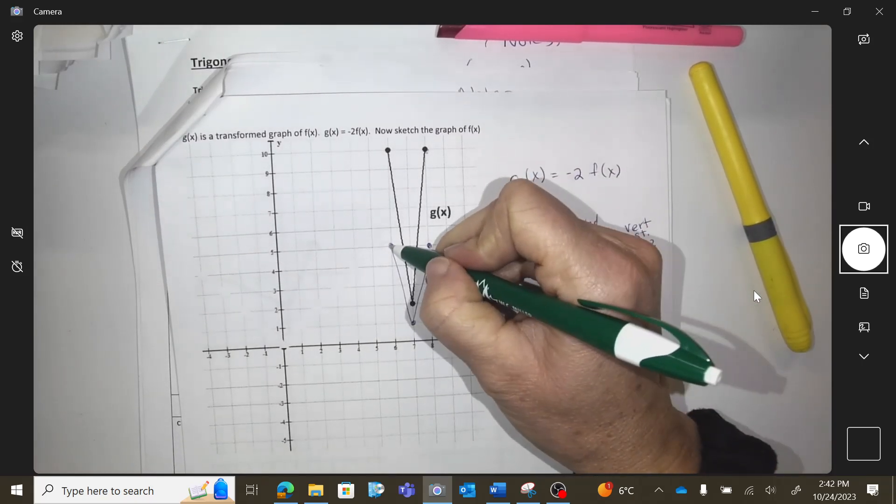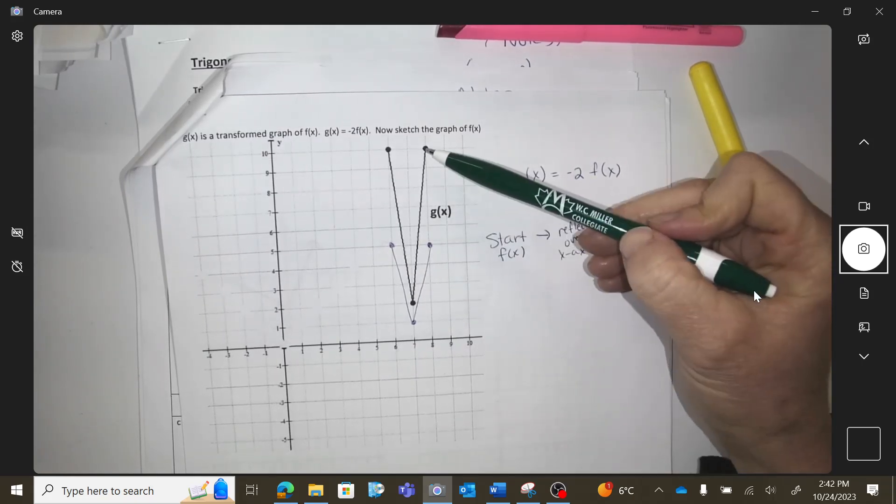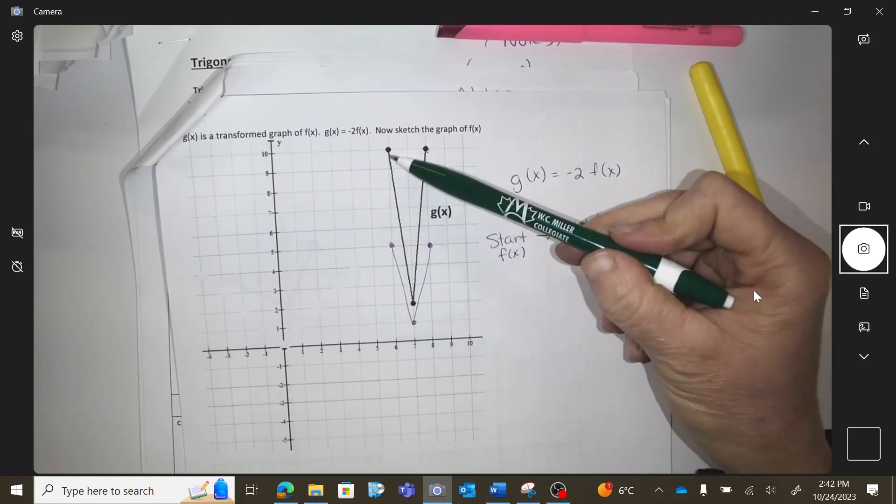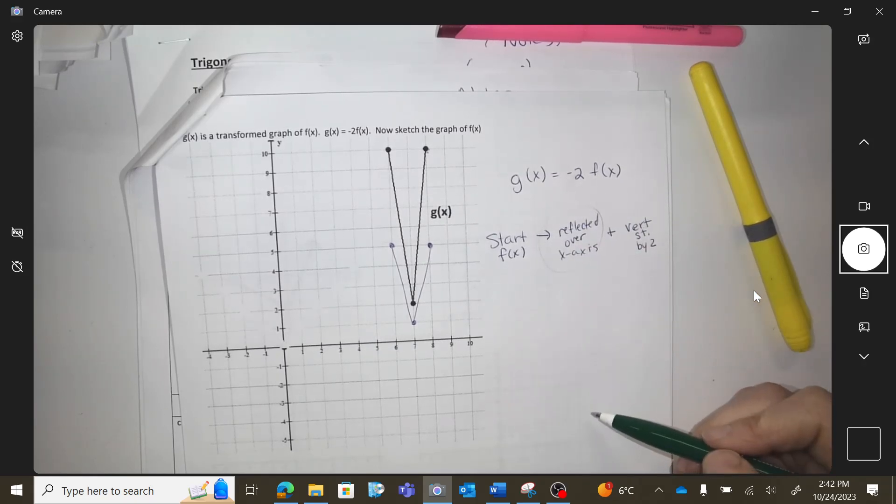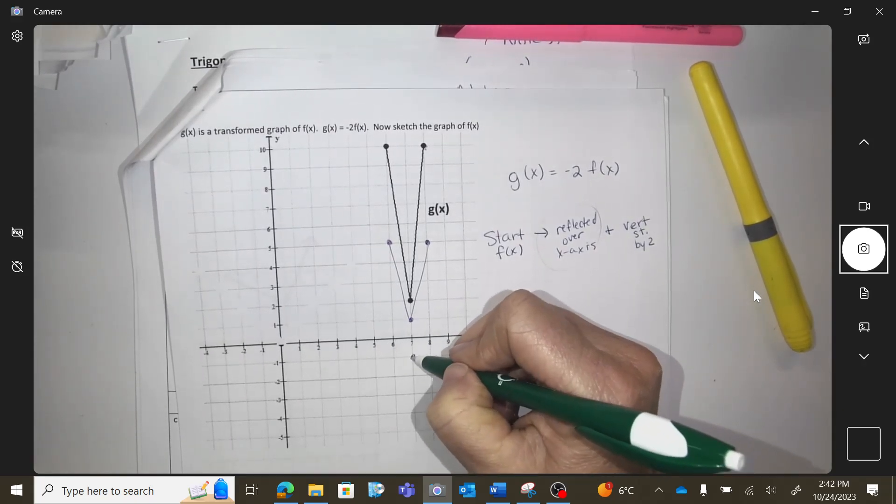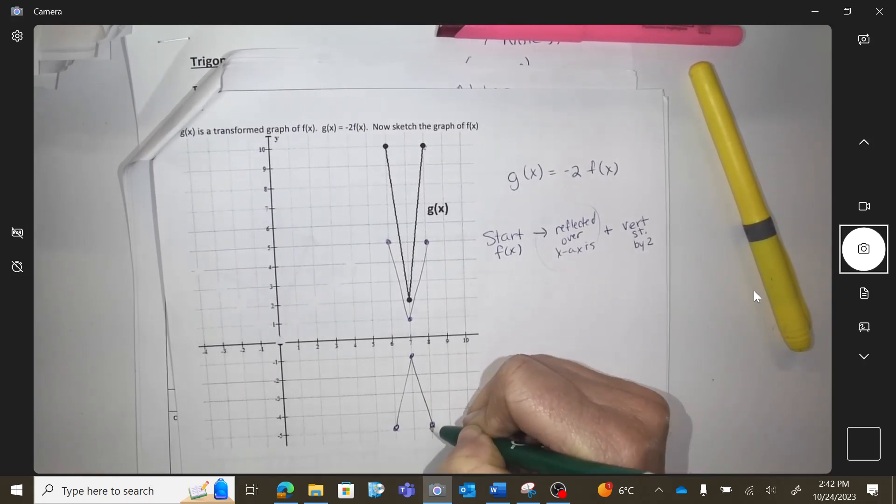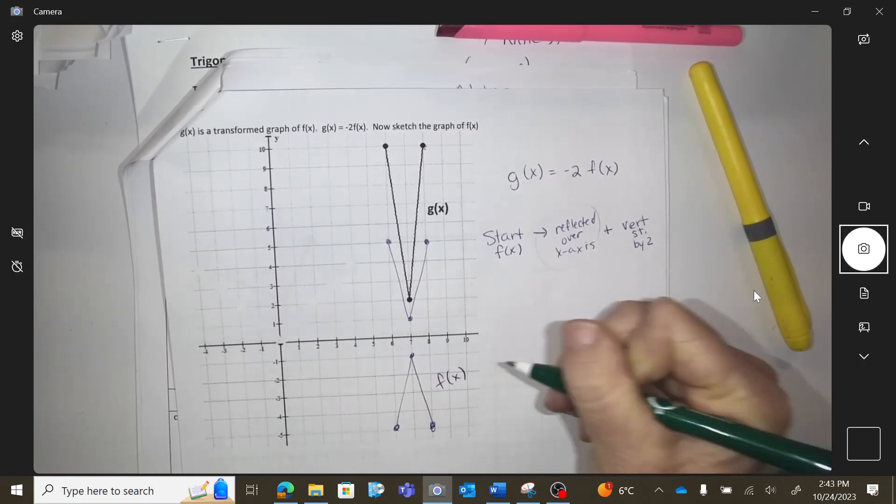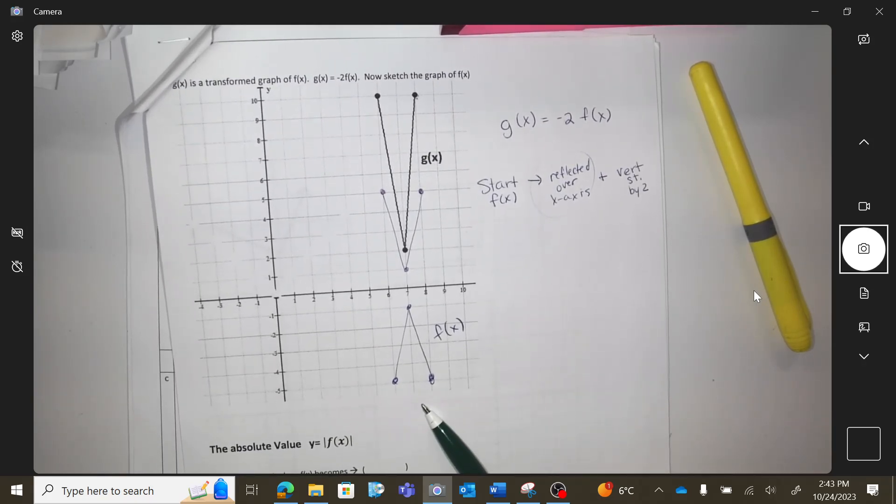Does that make sense? Every point's height got doubled, right? Do you see it? Five got doubled to ten, one got doubled to two, five got doubled to ten. And how do I undo the reflection over the x-axis? I need to reflect it over an x-axis. So this was where we started from.